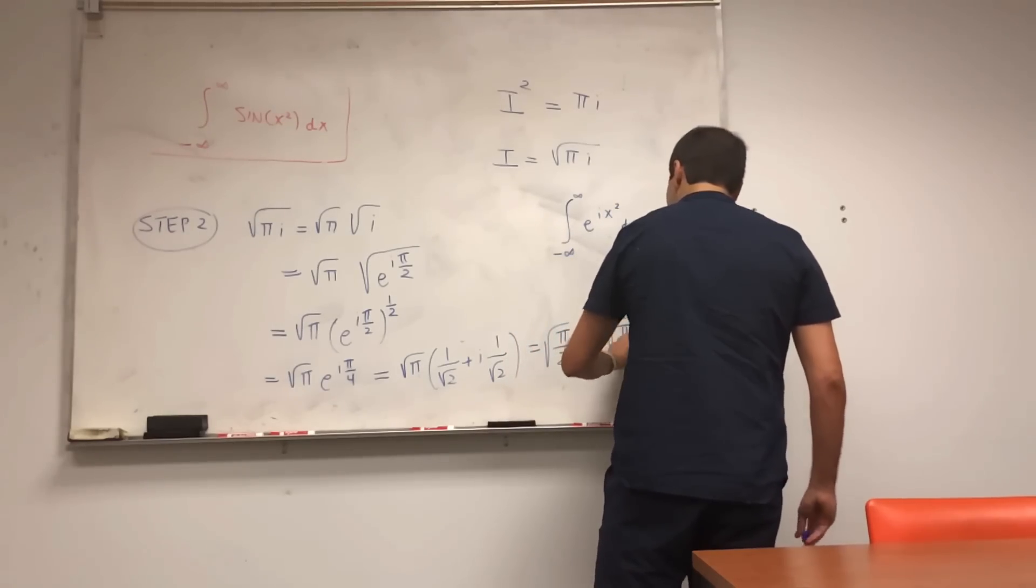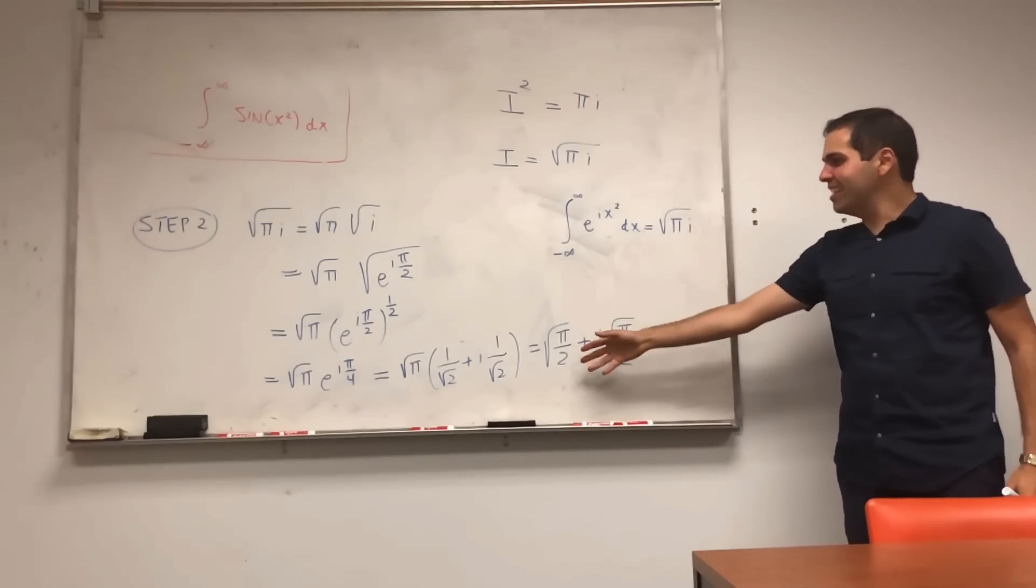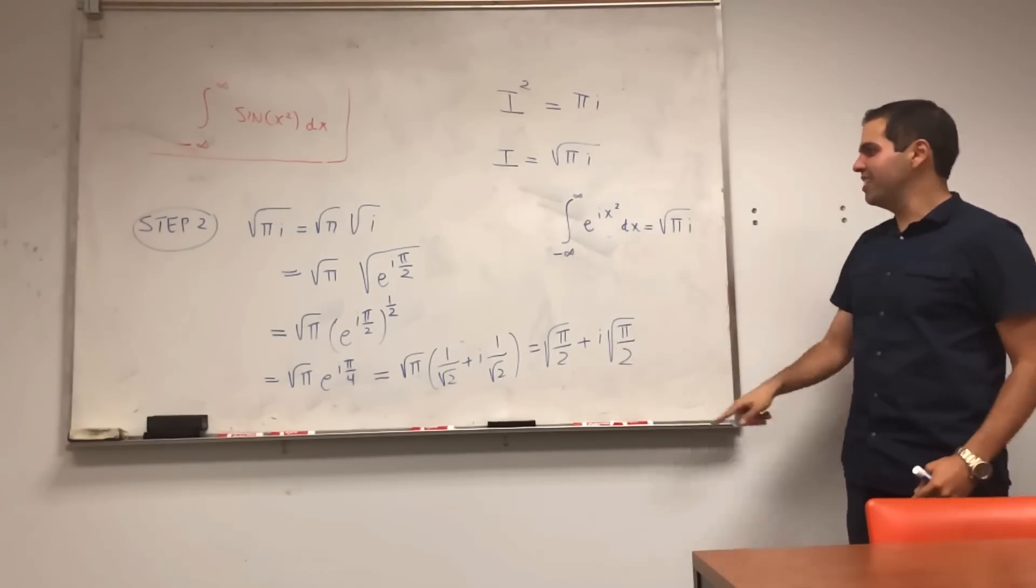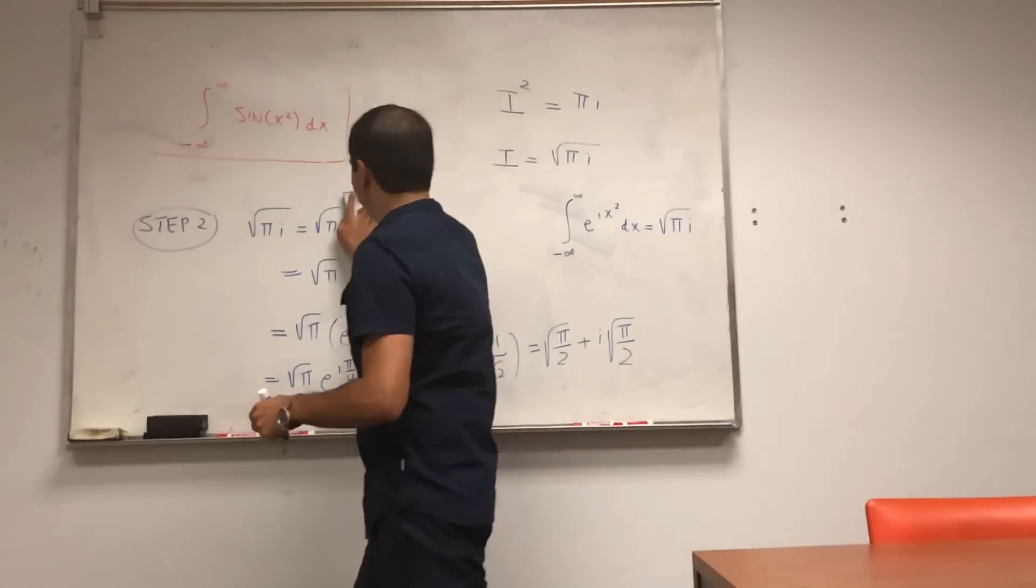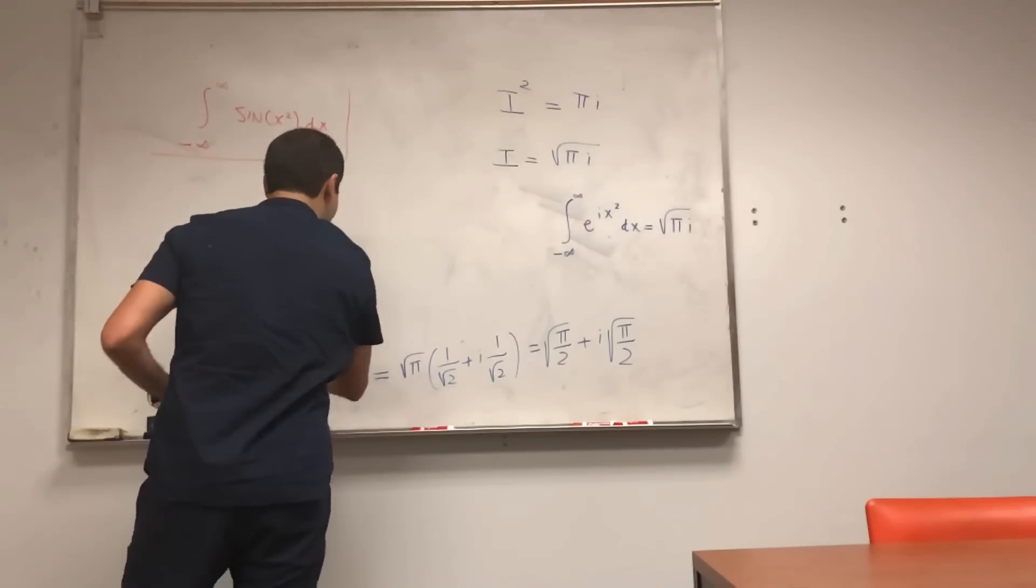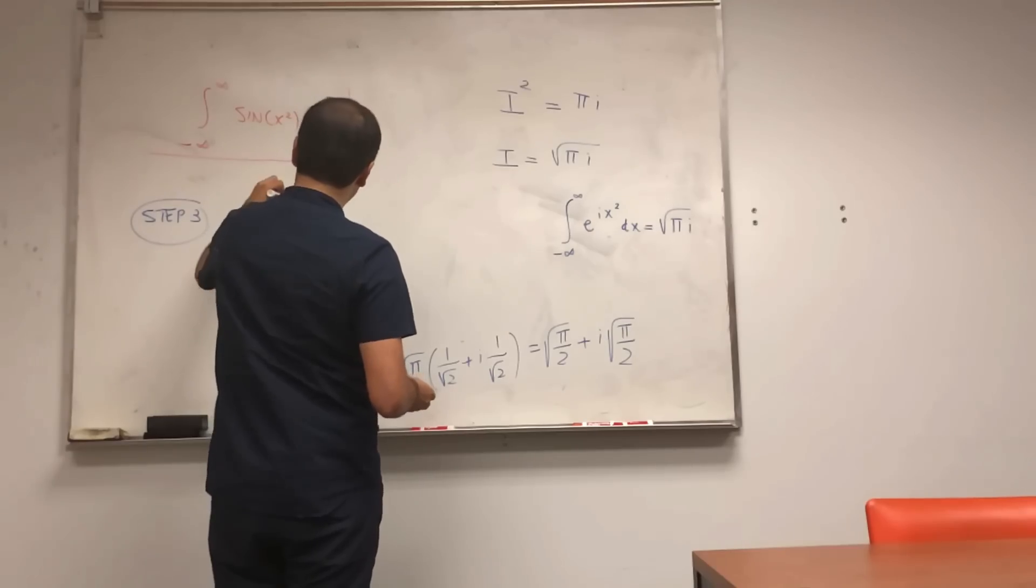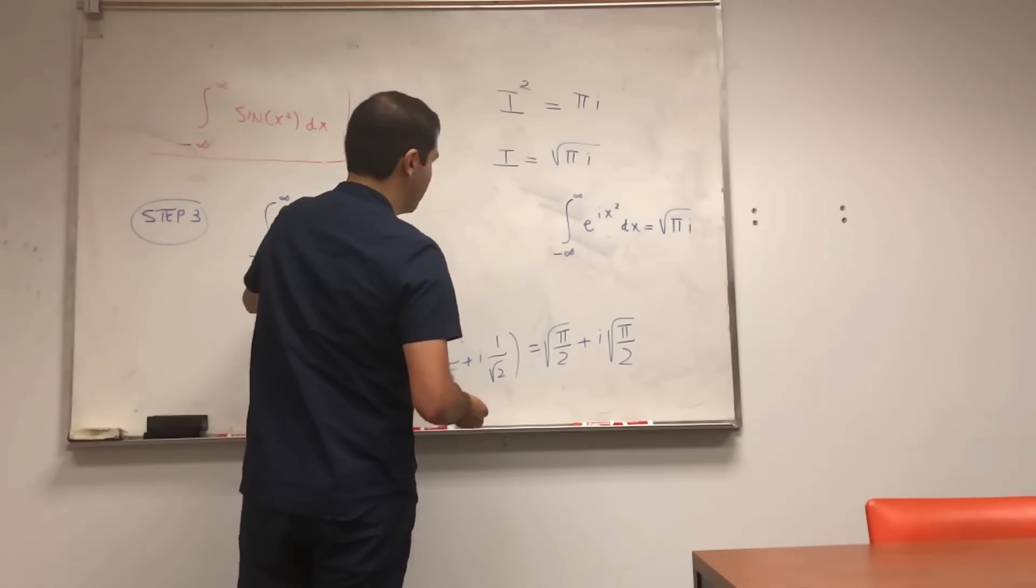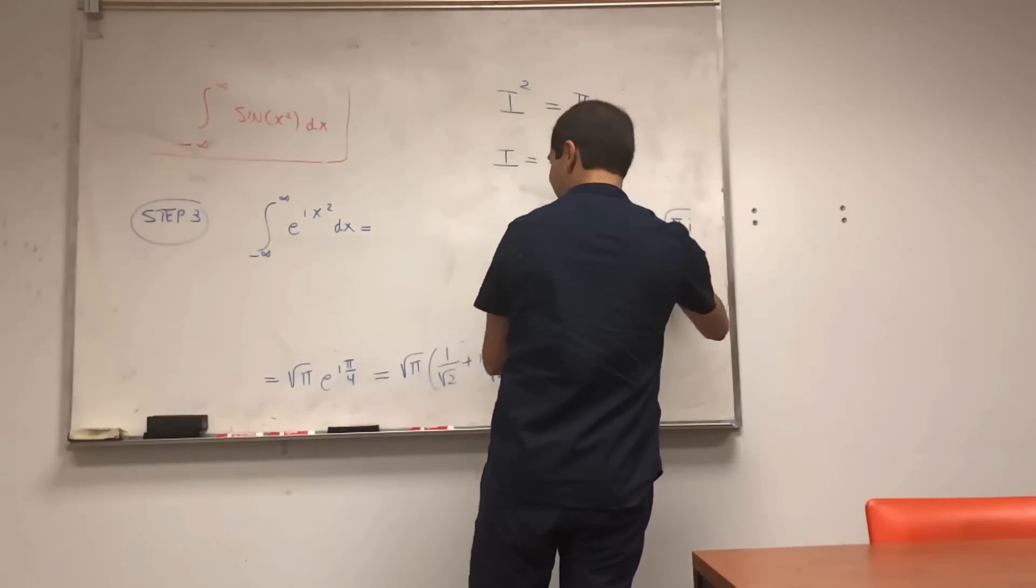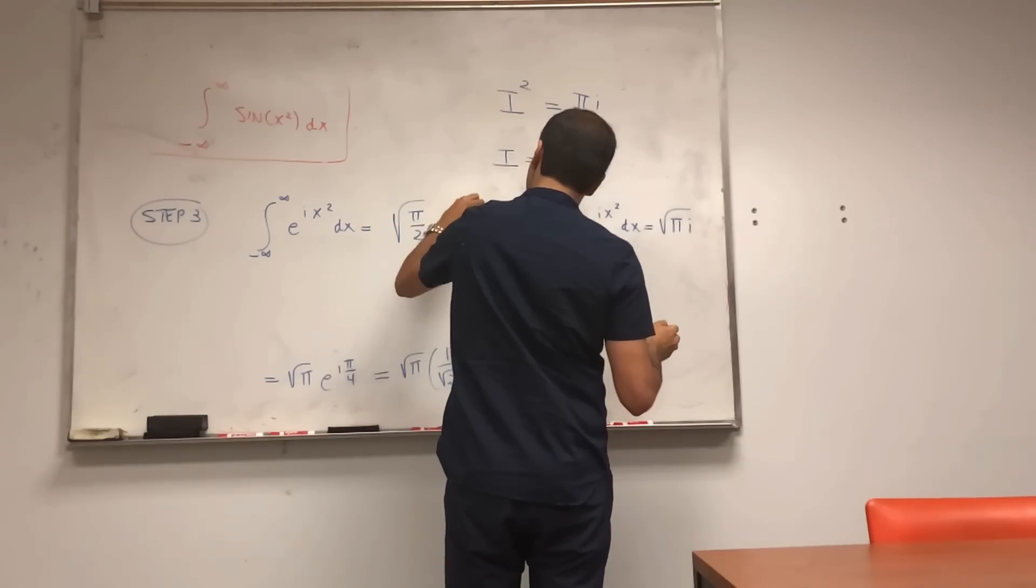This is wonderful, because we now wrote this complex number in terms of real and imaginary parts. And now if you look at back at this formula, we've basically arrived at our conclusion. What we get is integral from minus infinity to infinity of e to the ix squared dx, that's equal to this thing, which is this thing, so square root of pi over two, plus i square root of pi over two.